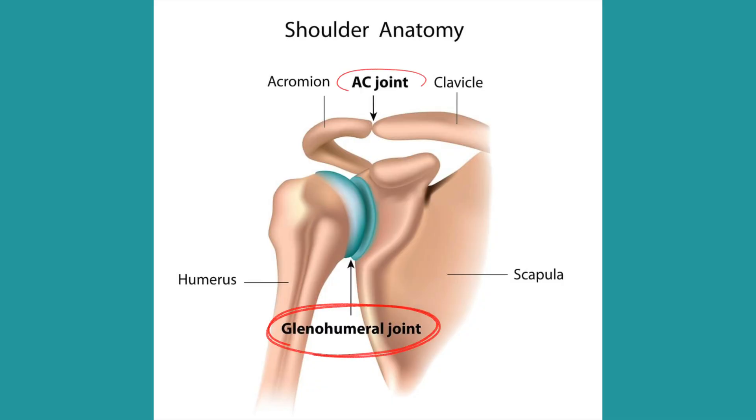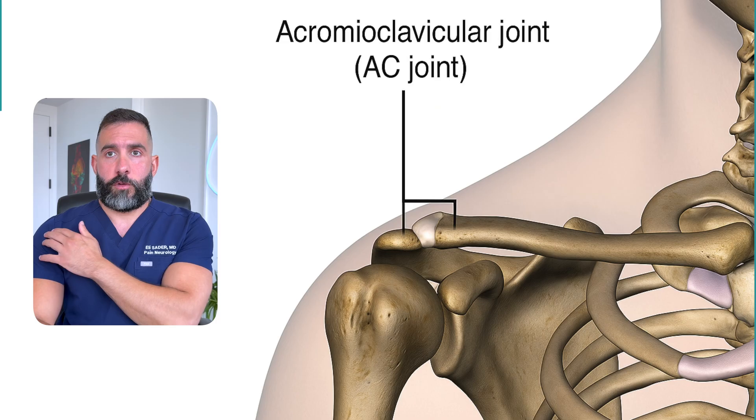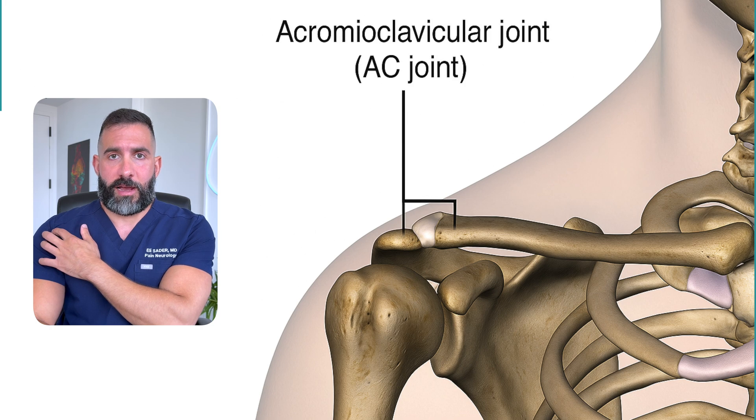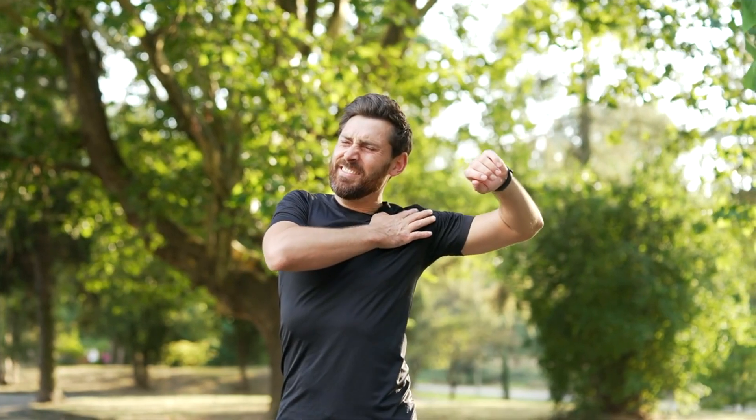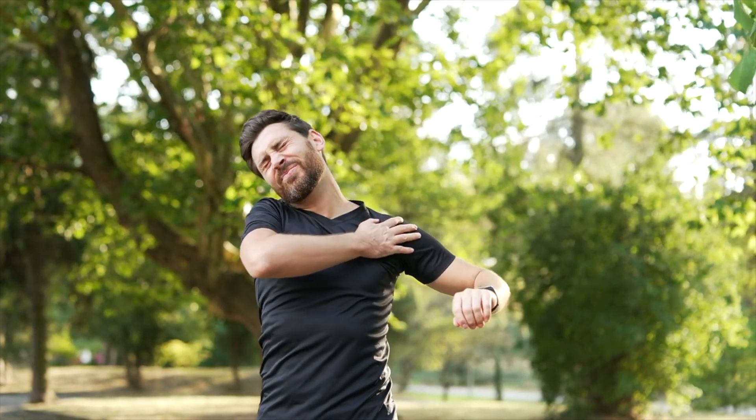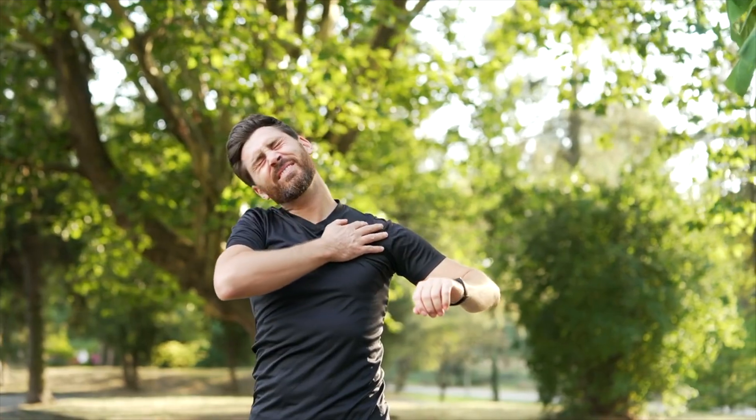The third type of shoulder pain that I see is caused by osteoarthritis — arthritis inside either the glenohumeral joint or the AC joint, which connects the collarbone to the shoulder. When your pain is caused by osteoarthritis in the shoulder joint or in the AC joint, the injection should be in the joint itself — either the glenohumeral joint or the AC joint. That kind of cortisone shot can actually help.